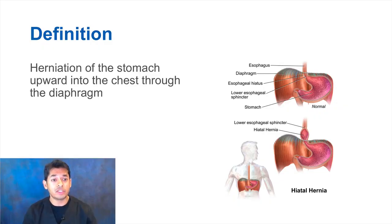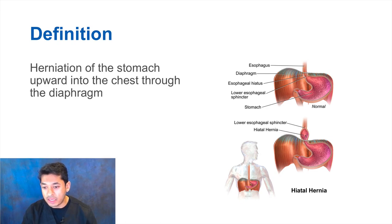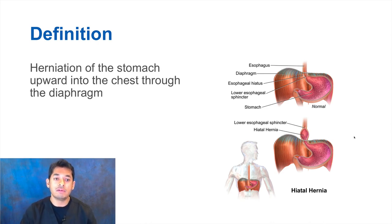A hiatal hernia is basically the herniation of the stomach upward into the chest through the diaphragm. This is the normal GI tract, and you have the diaphragm right here. Then you have the esophagus and the lower esophageal sphincter and the stomach right here. When you have a hiatal hernia, you have part of the stomach going up above the diaphragm, causing this hernia right there.